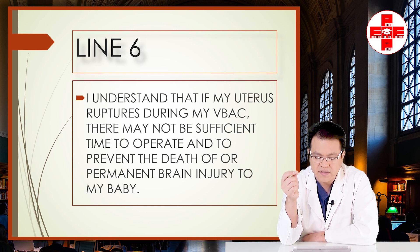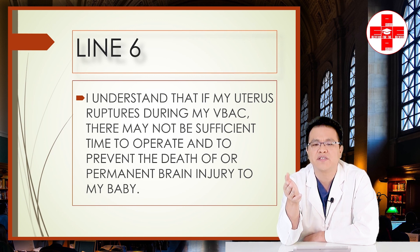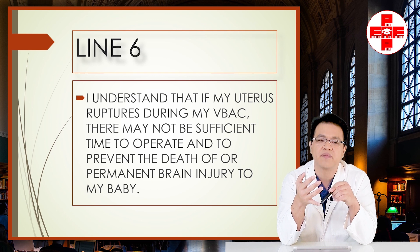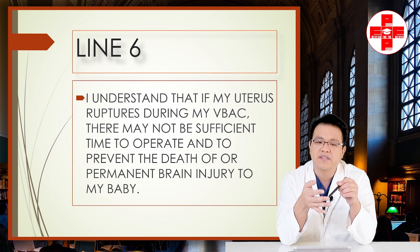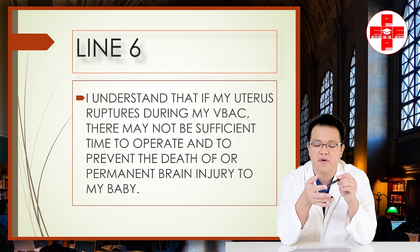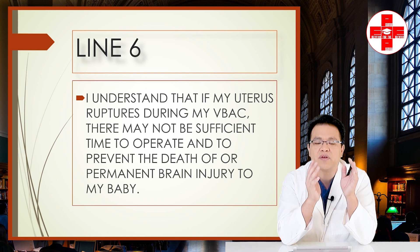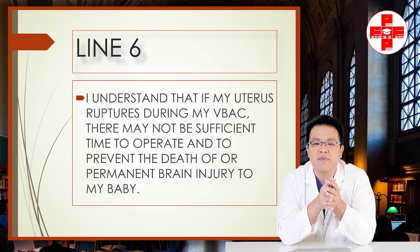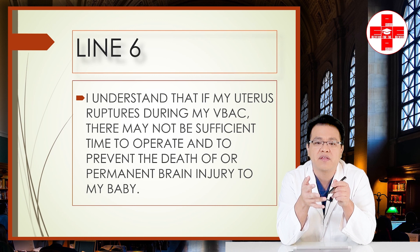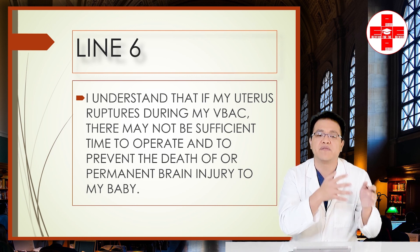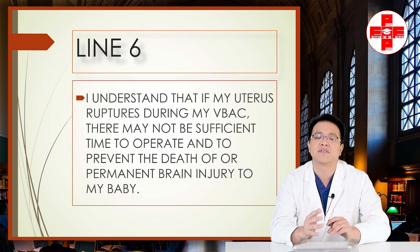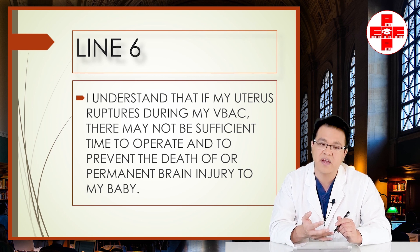Line six: 'I understand that if my uterus ruptures during my VBAC, there may not be sufficient time to operate and to prevent the death of or permanent brain injury to my baby.' Even if you have continuous fetal monitoring, 24/7 anesthesia, and in-house laborists — and you run to the OR and deliver by emergency C-section — you may do it all within 20 minutes but it may still not be fast enough to prevent fetal death or brain damage, including hypoxic ischemic encephalopathy.